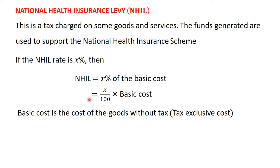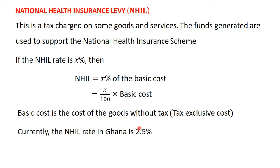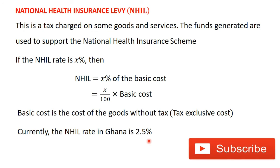If the rate is X percent, the National Health Insurance Levy is equal to X divided by 100 times the basic cost of the item — that is the tax-exclusive cost. Currently in Ghana, the VAT rate is 12.5 percent and the National Health Insurance Levy rate is 2.5 percent. In the next video, we are going to apply what we've learned to solve practical problems. Thank you for watching and subscribe to this channel for more videos. Bye.